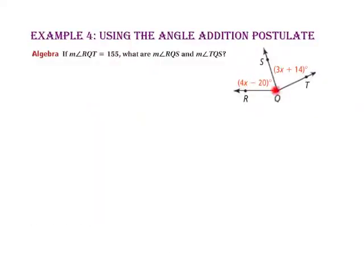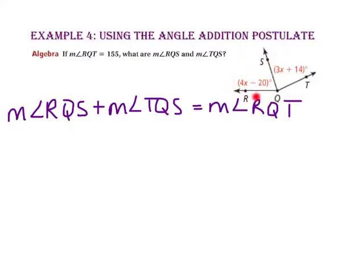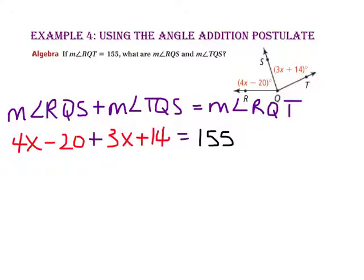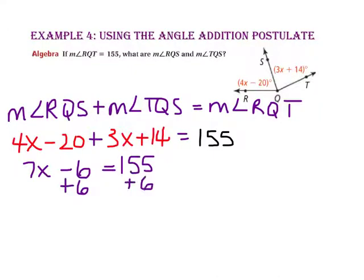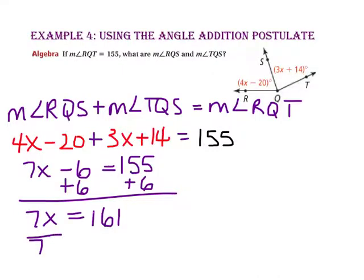Example 4 asks: if the measure of angle RQT equals 155, what are the measures of angle RQS and angle TQS? Using the angle addition postulate, we substitute 4X minus 20 for the measure of angle RQS, 3X plus 14 for the measure of angle TQS, and 155 for the measure of angle RQT. Combining like terms: 4X plus 3X is 7X, and negative 20 plus 14 is negative 6, so 7X minus 6 equals 155. Adding 6 to both sides gives 7X equals 161. Dividing both sides by 7, X equals 23.